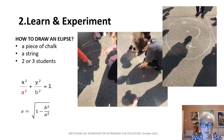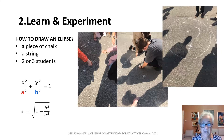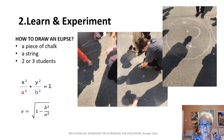This experiment is very simple — to draw an ellipse. The students need a piece of chalk and a string. They can work in groups and observe very simply that the eccentricity is different depending on the parameters they choose.